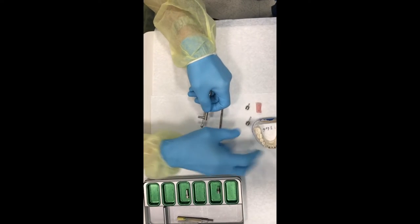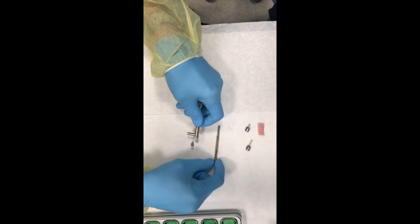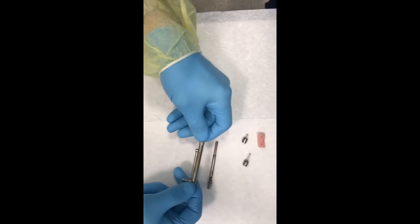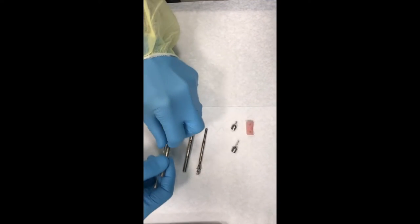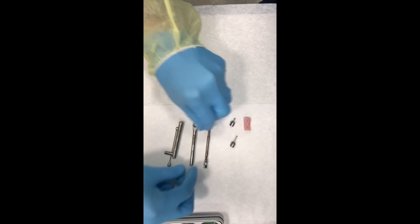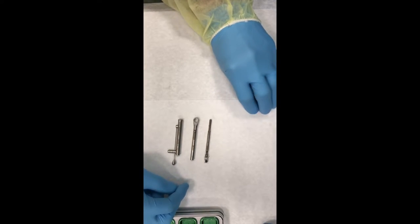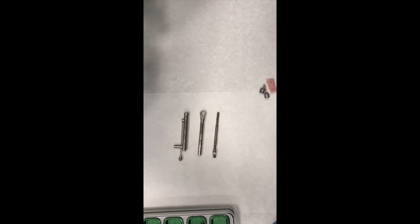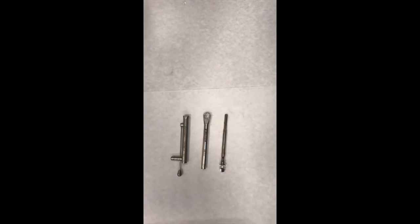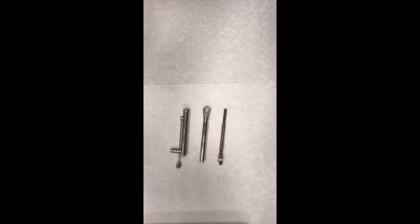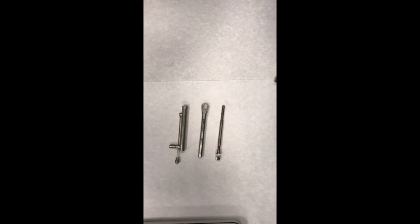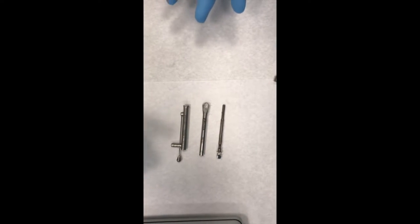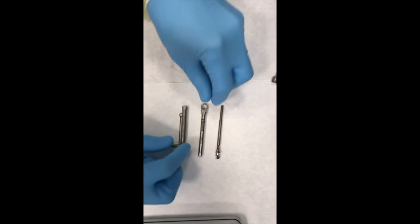I'm going to take it apart and then put it back together again so you can see what's going on here. So we're going to go ahead and remove the inner portion of it, and there's a little sheet that comes off in here, and you can see that the torque wrench now has these three components.